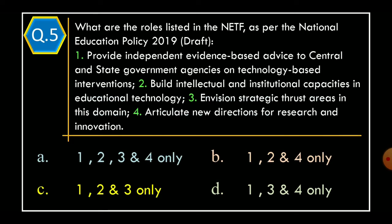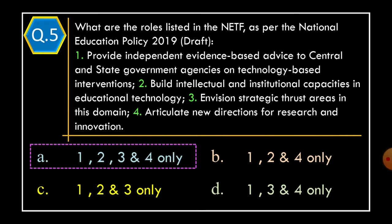Question 5. What are the roles listed in the NETF as per the National Education Policy 2019 draft? Statement 1: Provide independent evidence-based advice to central and state government agencies on technology-based interventions. Statement 2: Build intellectual and institutional capacities in educational technology. Statement 3: Envision strategic thrust areas in this domain. Statement 4: Articulate new directions for research and innovation. The correct option is Option A: Statements 1, 2, 3, and 4 only.